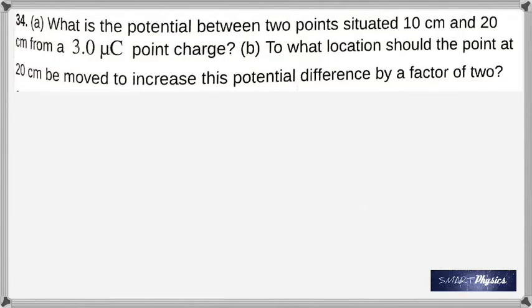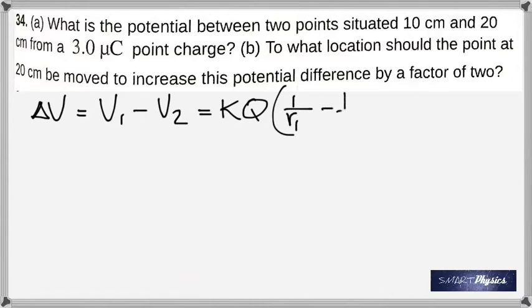What is the potential between 2 points situated 10 centimeters and 20 centimeters from a 3 microcoulomb point charge? Potential difference is the difference in potential between the 2 points, which is kq is going to be common, so 1 by r1 minus 1 by r2. Because it's kq by r1 minus kq by r2, I've taken out kq.